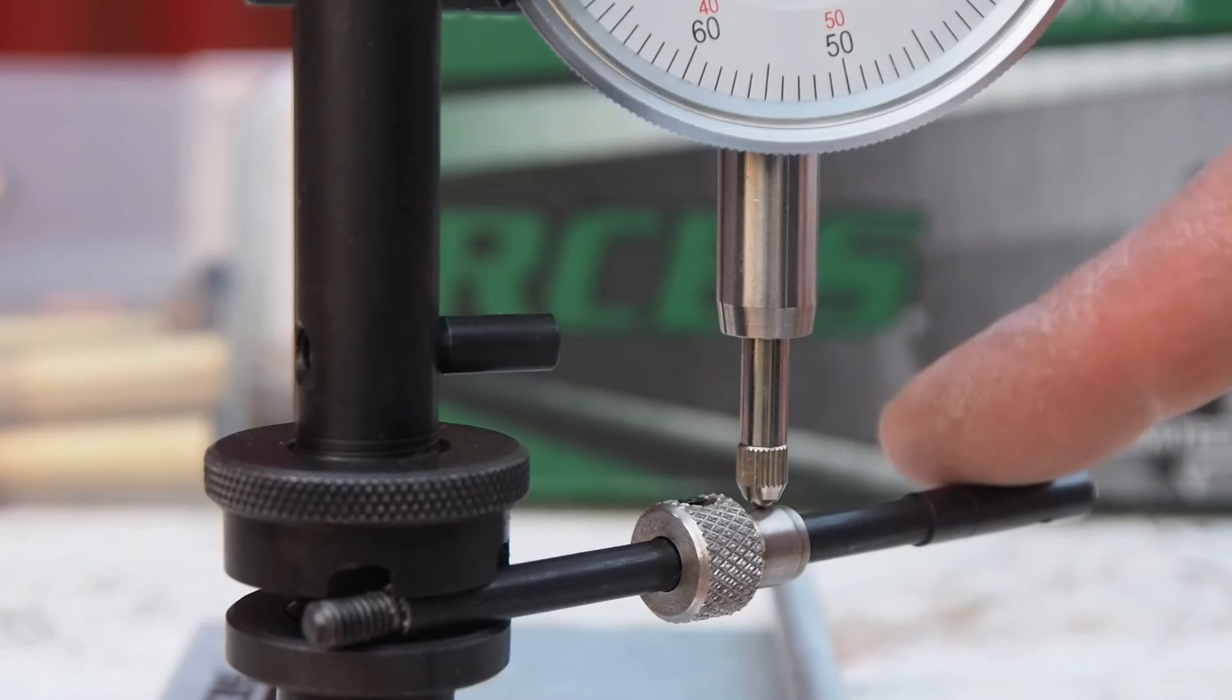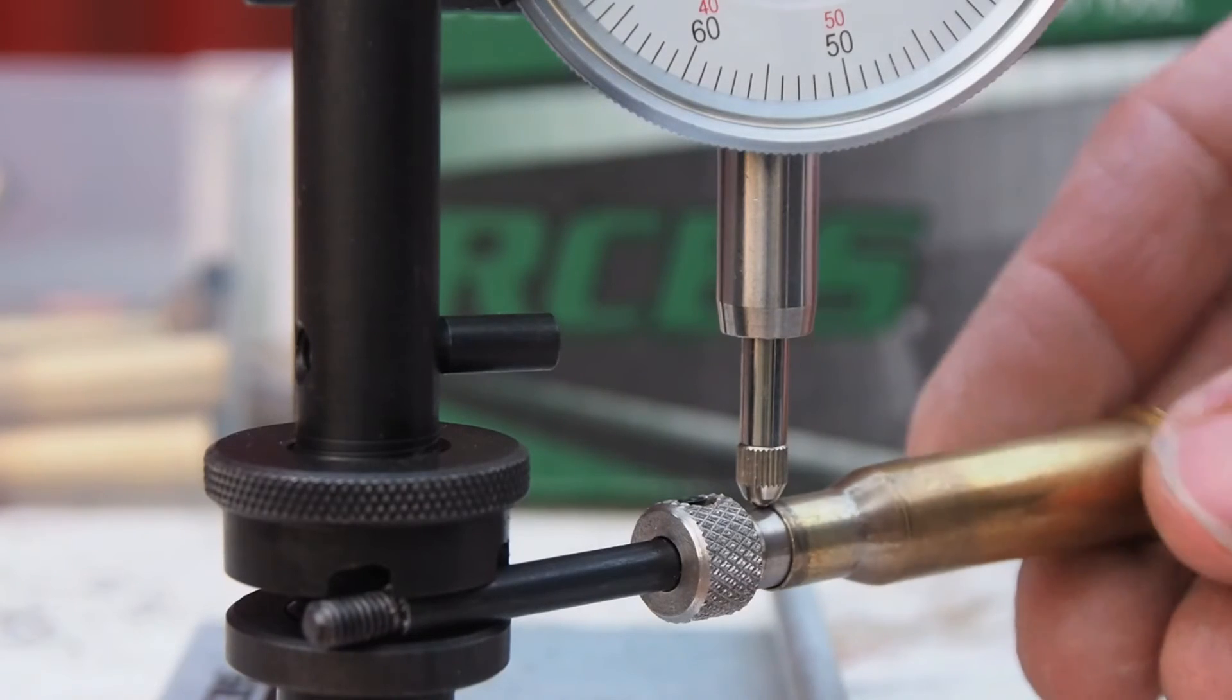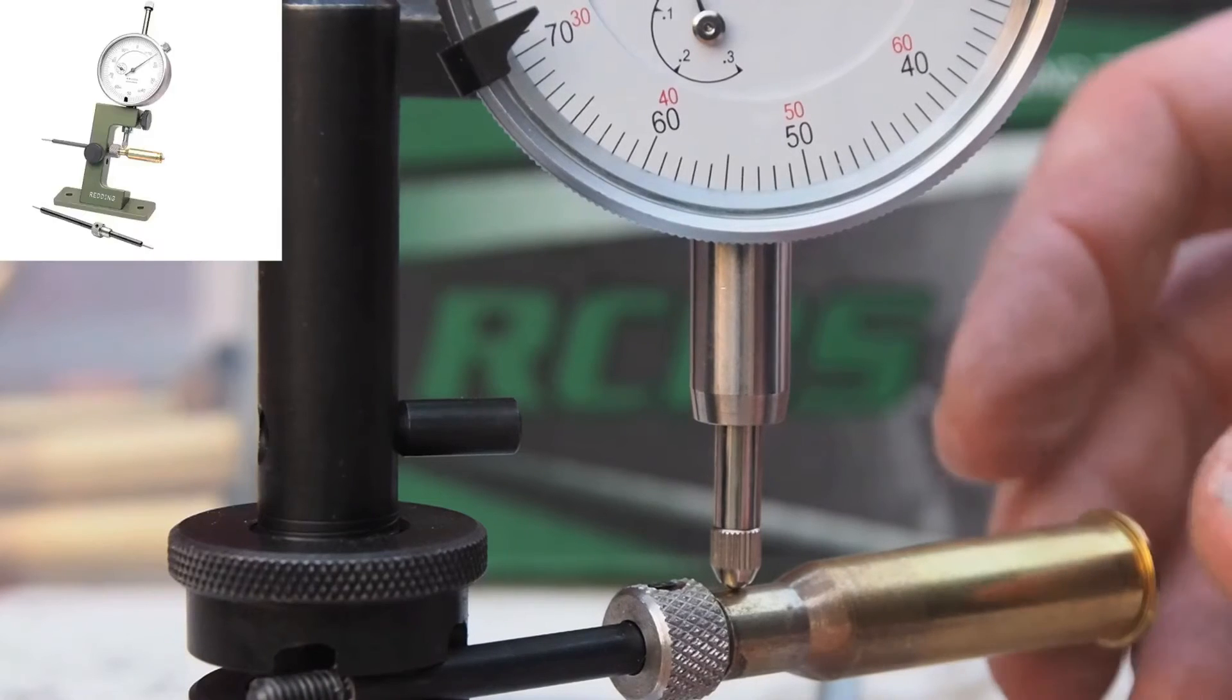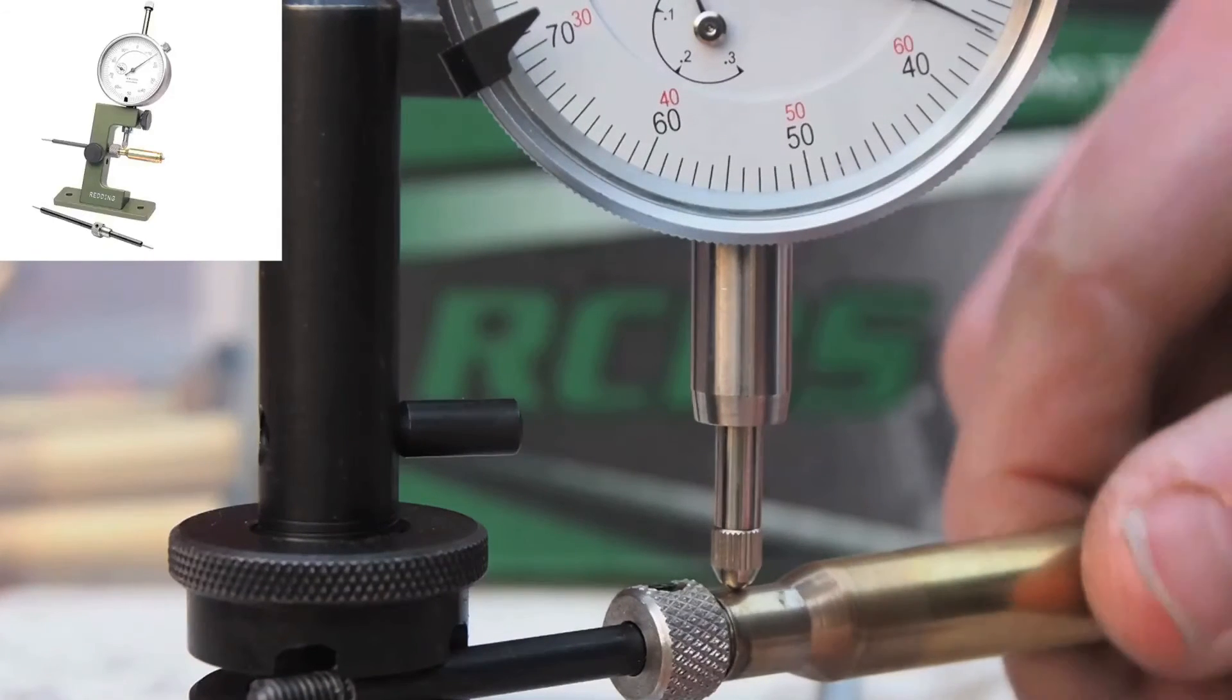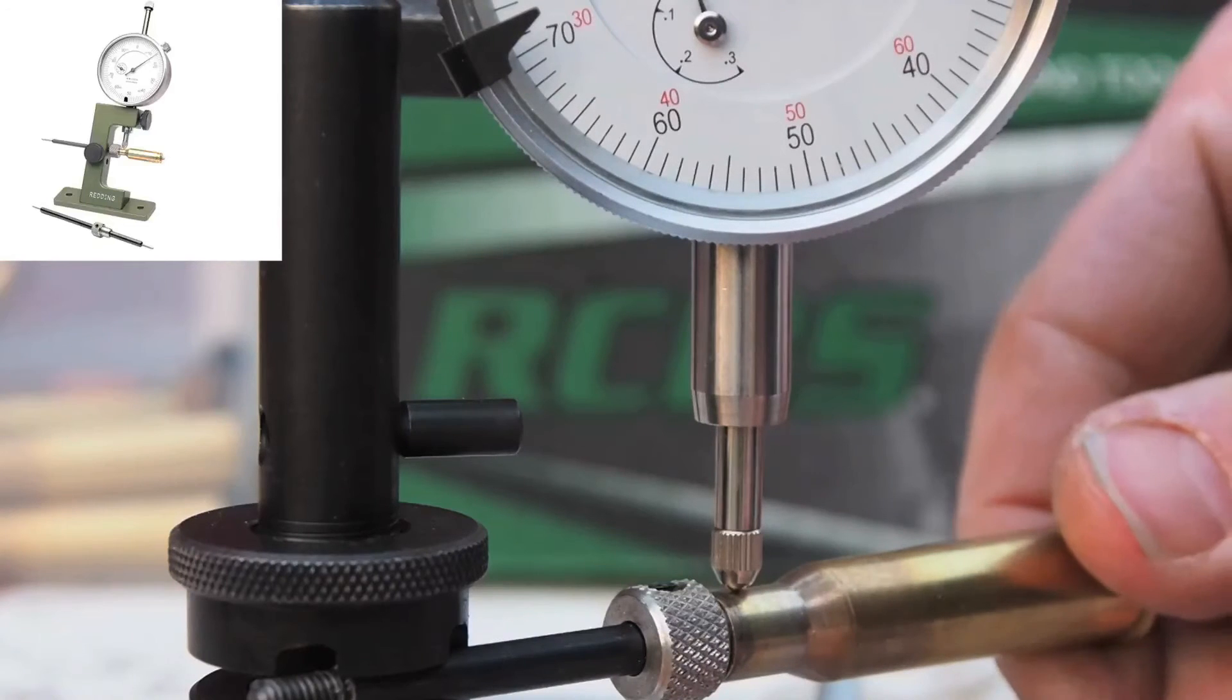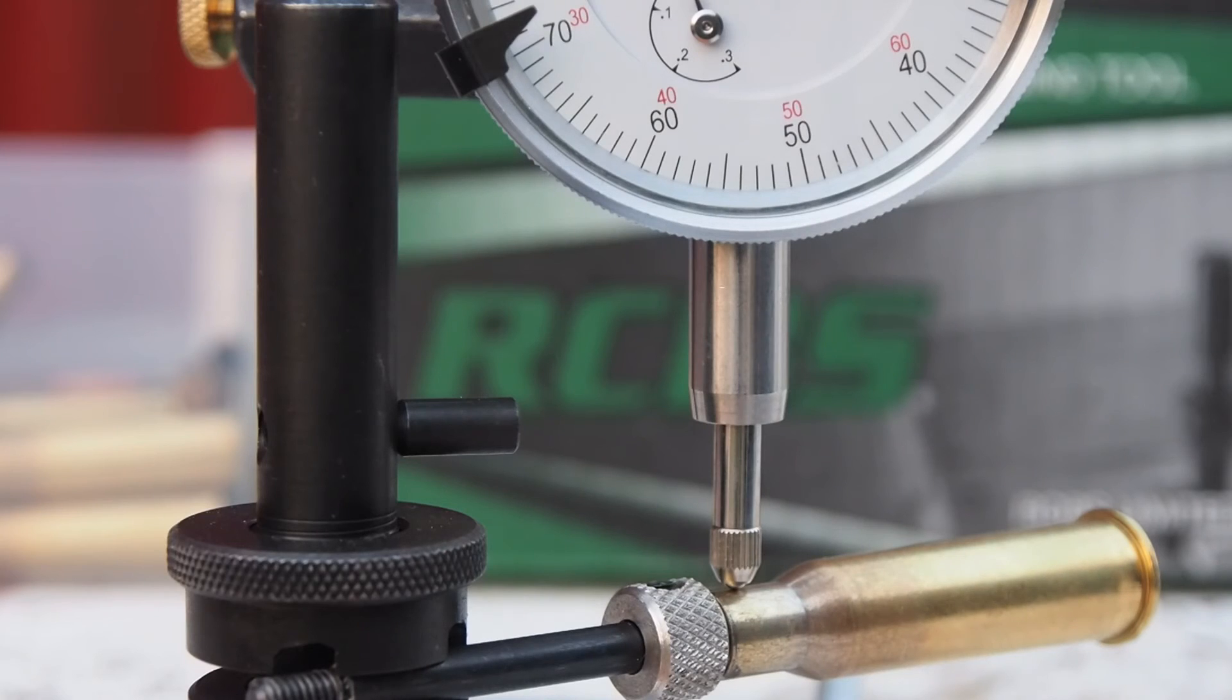So what you see here is a Redding flash hole deburring tool, which you can buy. I think it only costs $6. Simply sliding your brass on, position it relative to the flash hole in the flash hole deburring device, and you can get much better readings. They're more predictable and more accurate.